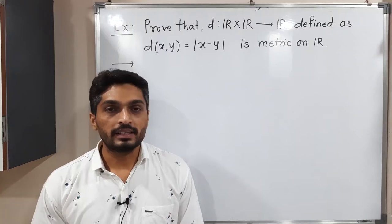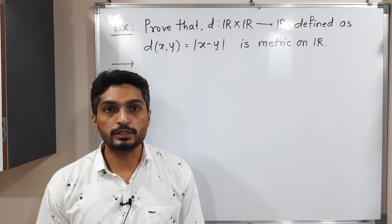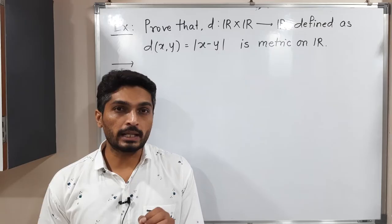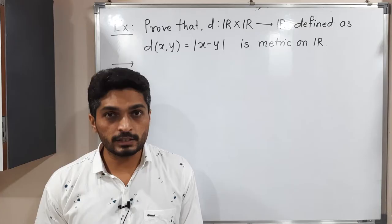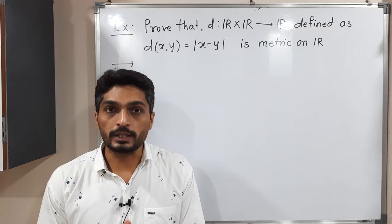Let us discuss this example. We have a function d defined as d(x, y) = |x − y|, defined on R, meaning we take elements from the real numbers. We are going to prove it is a metric on R. To prove any function is a metric on R, we have to prove that it satisfies four properties. So let us start to prove it is a metric on R.